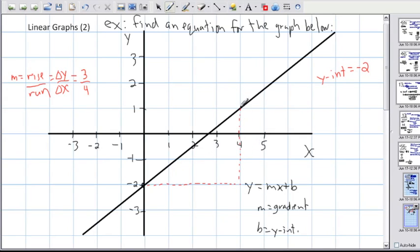But I find the key is here to look at this change in y. This one right here was a change of 3. This one right here was a change of 4. That's why I do 3 over 4 because it's like saying rise over run.